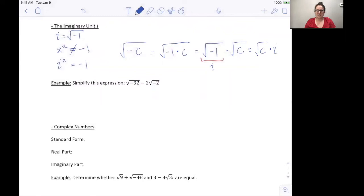Let's practice that in an example. Simplify this expression, the square root of negative 32 minus two times the square root of negative two. So the square root of negative 32, we can write as negative one times 32. Write out the rest of the expression negative two times the square root of negative two, we can rewrite as negative one times two. So we'll do exactly like we did above and we'll say the square root of negative one times the square root of 32 minus two times the square root of negative one times the square root of two.